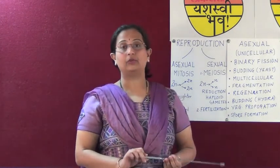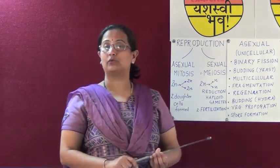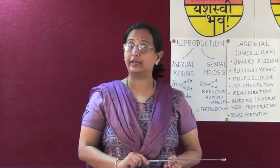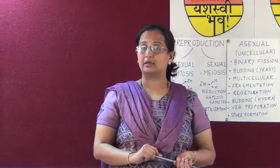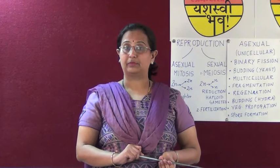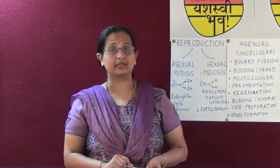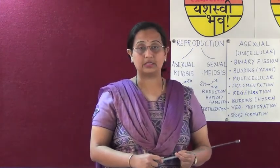The flower is the reproductive organ of the plant. A flower consists of four whorls: calyx, corolla, androecium, and gynoecium. The calyx — the outermost whorl — consists of sepals which protect the inner delicate whorls. Corolla is made up of petals that are colourful and attractive, drawing insects for pollination. The androecium is the male reproductive part of the flower, consisting of the anther and filament — called the stamen. The anther consists of pollen grains, which are the male gametes.